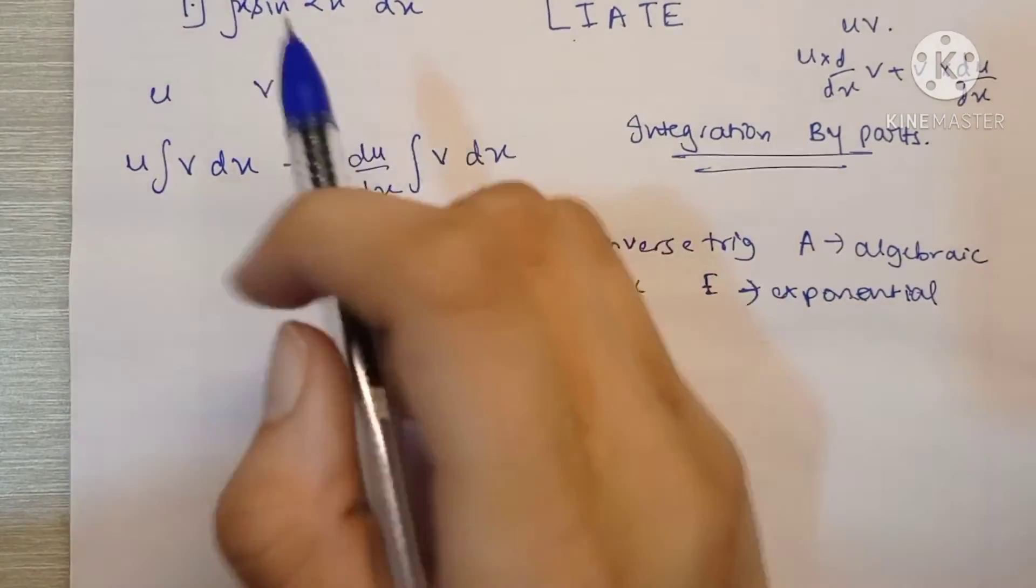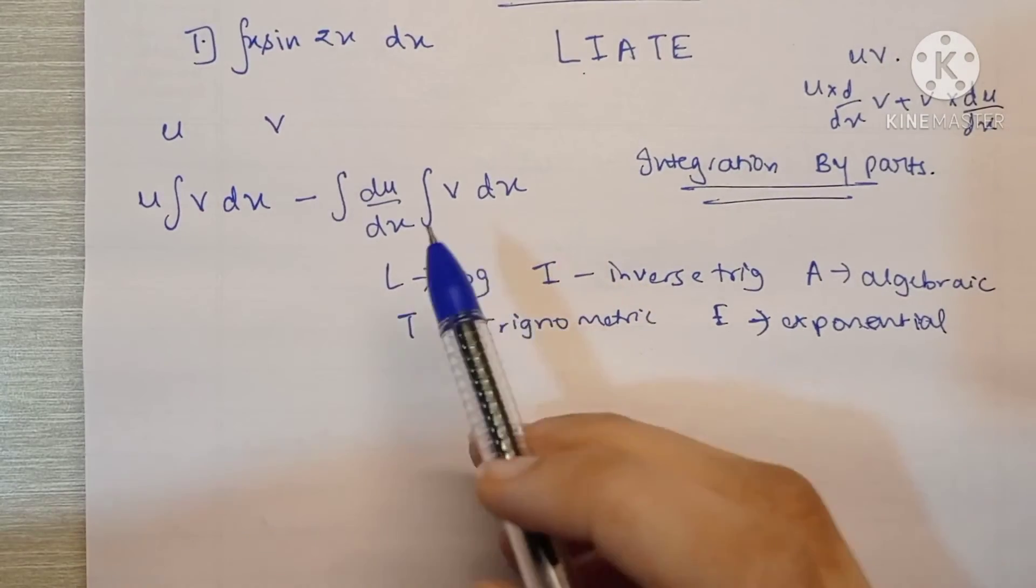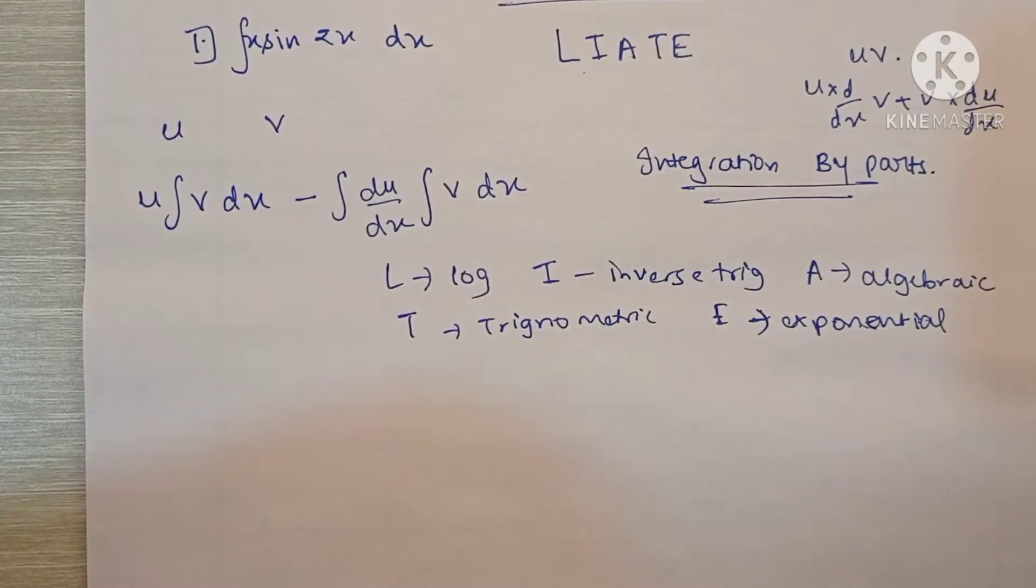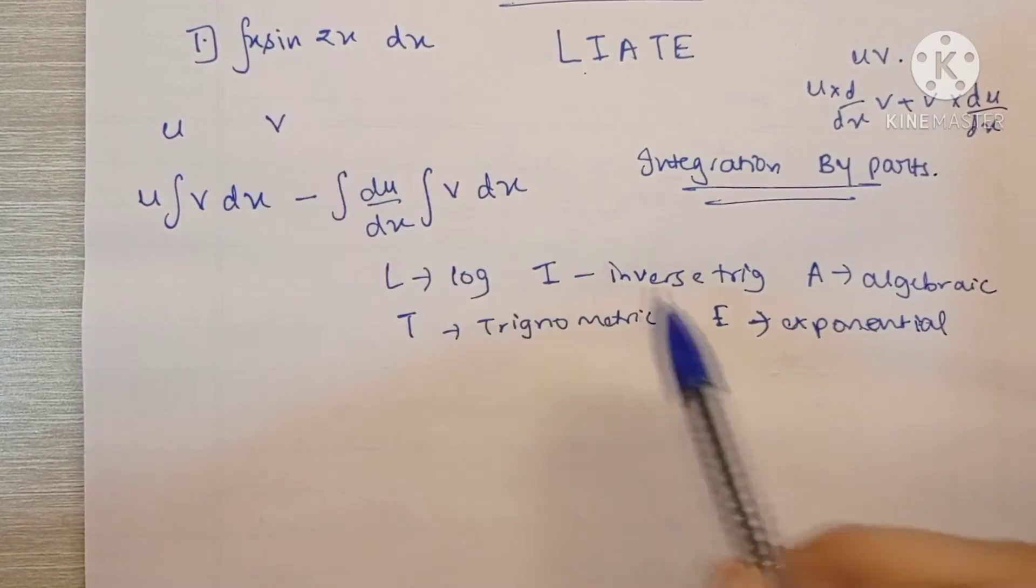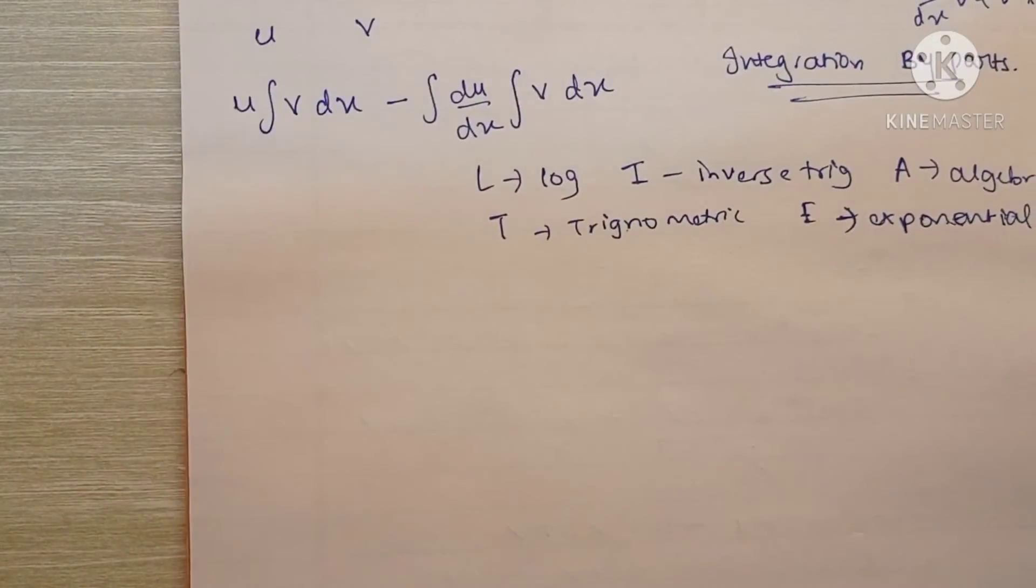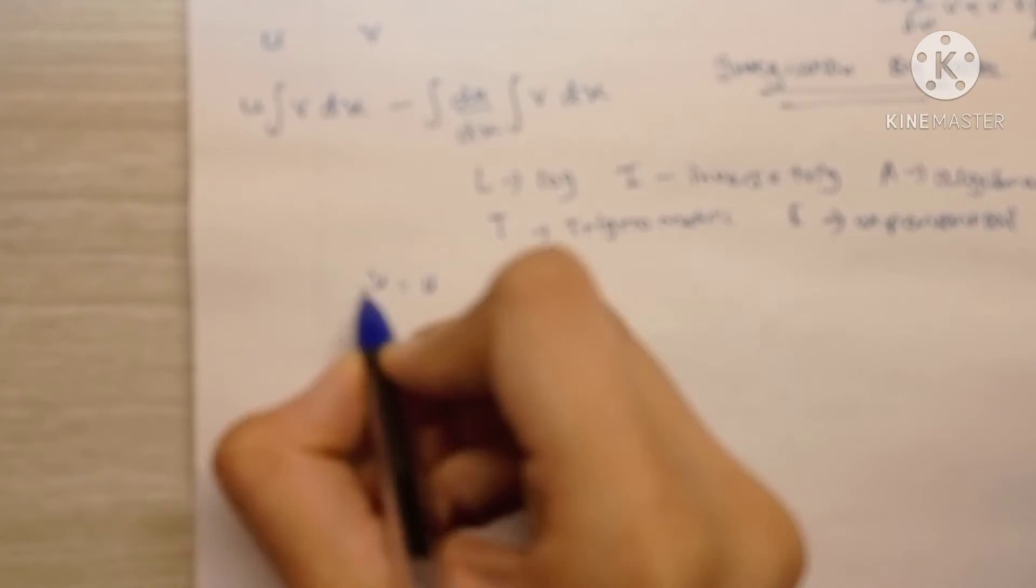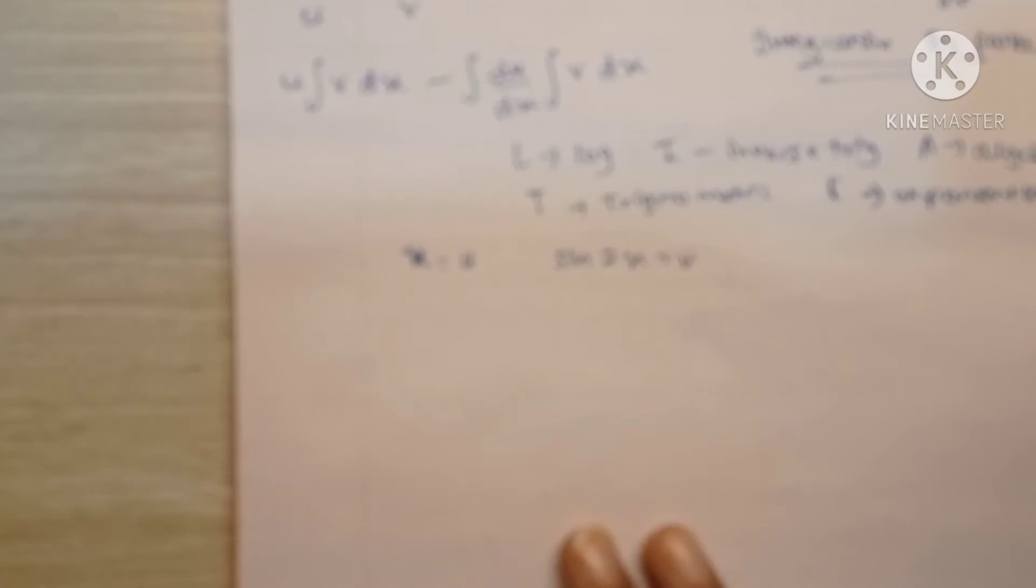Okay, so with that let's begin with our first question. So here we can see that the first function, according to the LIATE rule, should be the algebraic function x, because x appears before T trigonometric. So we are going to keep x as u and sin 2x as v. So let's integrate it now.